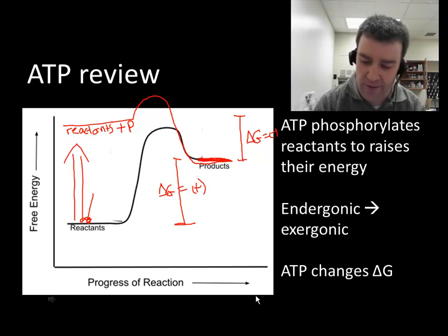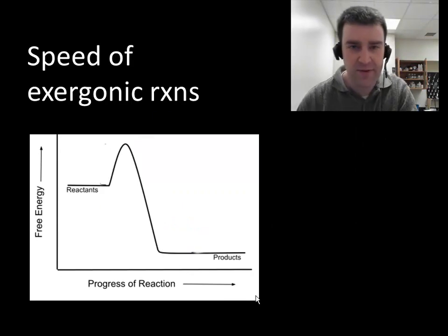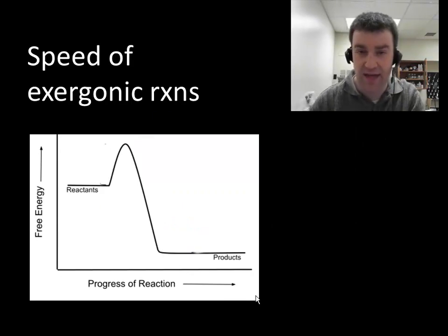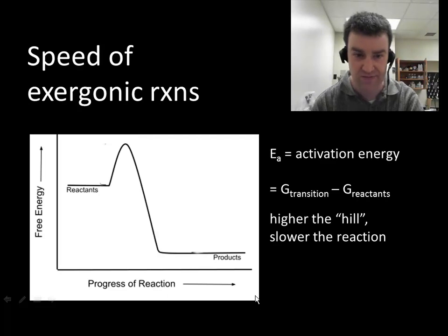So now we're going to assume that the chemical reaction is exergonic. Either ATP phosphorylated the reactants and made them exergonic, or perhaps the reaction was exergonic to begin with. And so the other factor that might be a problem for cells is if the reaction just occurs too slowly to be useful for the cell. And what really governs speed is a factor called the activation energy.